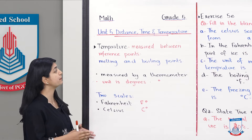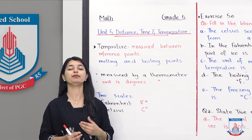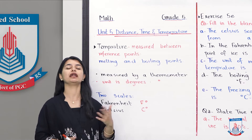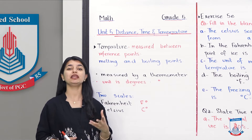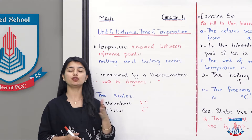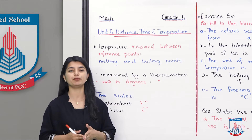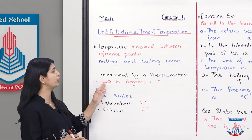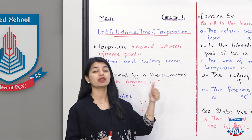Temperature is measured between two reference points. We gauge from it how warm or cold something is — how much warmth or cooling there is. So we calculate temperature between two reference points: melting and boiling points.